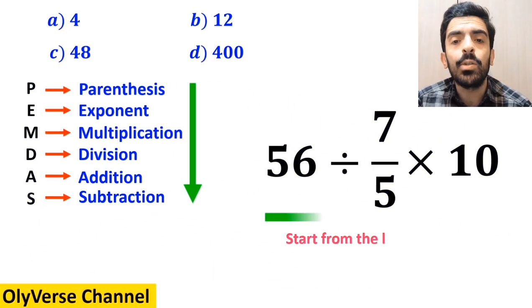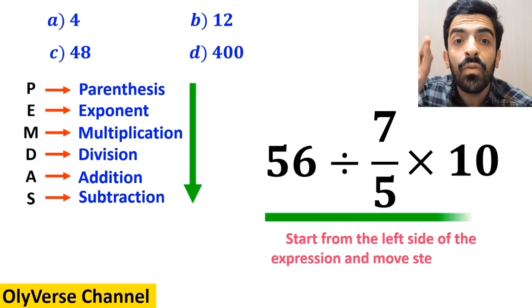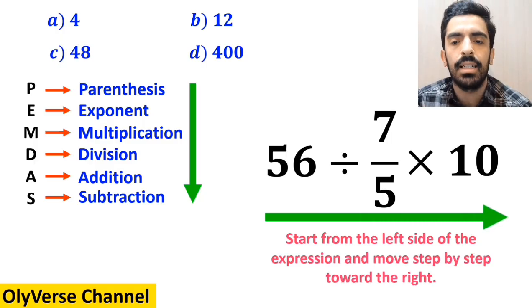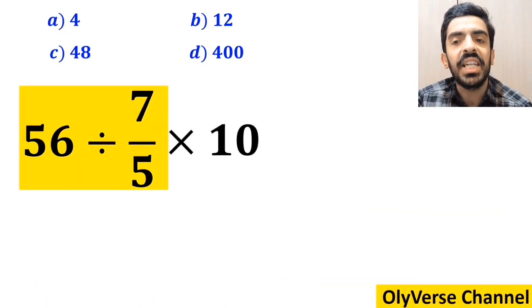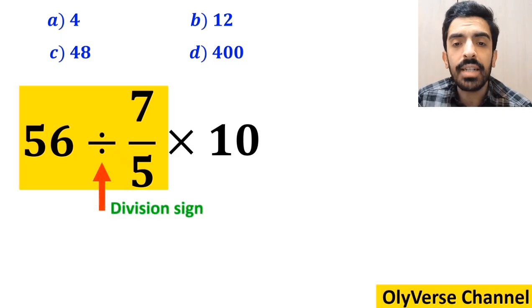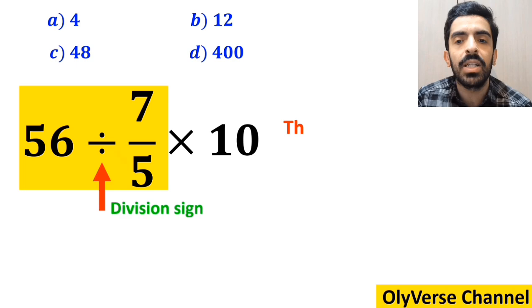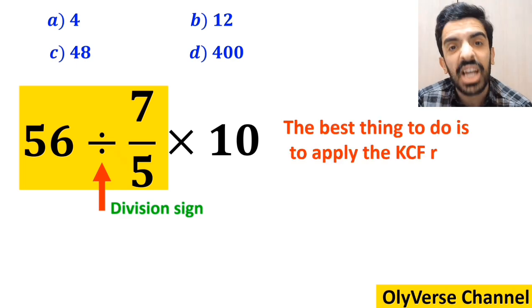In this case, the best thing to do is to start from the left side of the expression and move step by step toward the right. So, first we start with the expression 56 divided by 7 over 5. Okay, whenever we come across a division sign between two terms, the best thing to do is to apply the KCF rule.